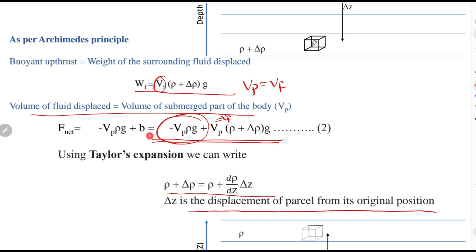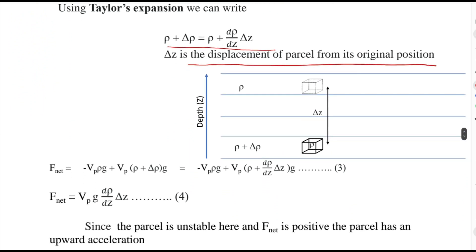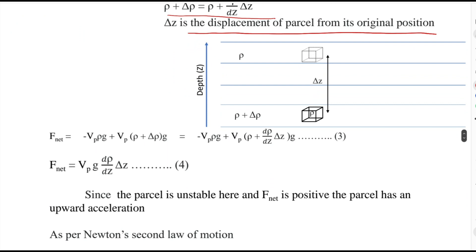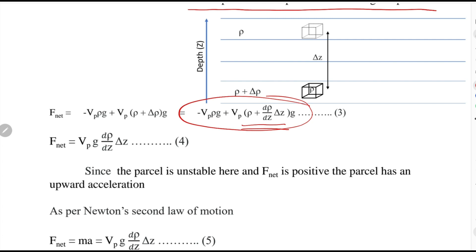Using this and Taylor's expansion, we can rewrite equation 2. After cancelling and rearranging the terms, we get equation 4, where F net equals the volume of the parcel times acceleration due to gravity times (d rho / dz) times delta z. Since the net force is positive, the parcel is unstable and it will accelerate upward as it returns to its initial position.